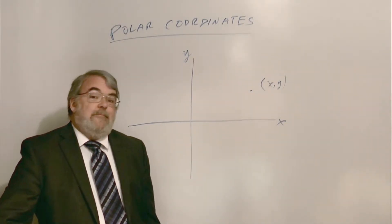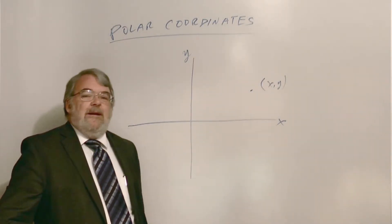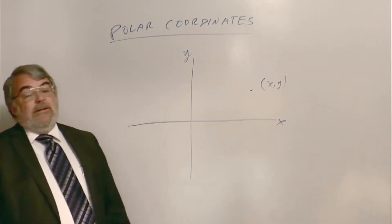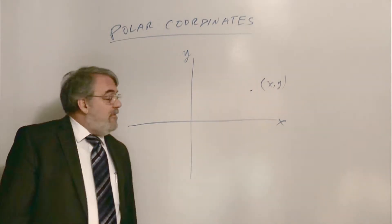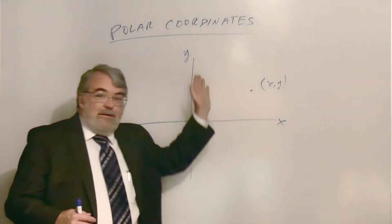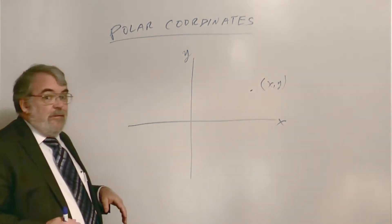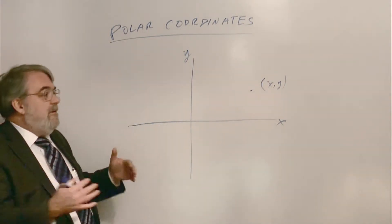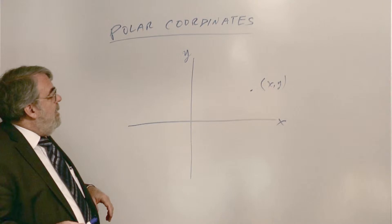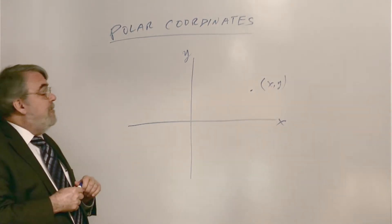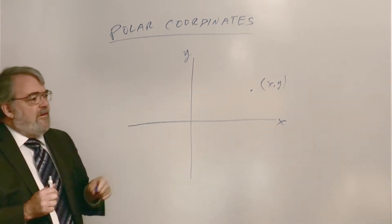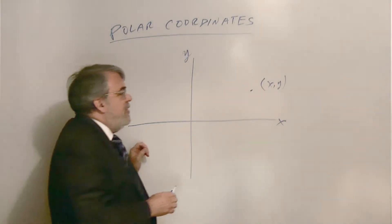What are polar coordinates? Well, it's a different coordinate system, quite a bit different from our XY coordinate system. The XY coordinate system we're used to in three dimensions is XY and Z because you have a third dimension. It's called a rectangular coordinate system, and the polar coordinate system measures a point location in two different ways.